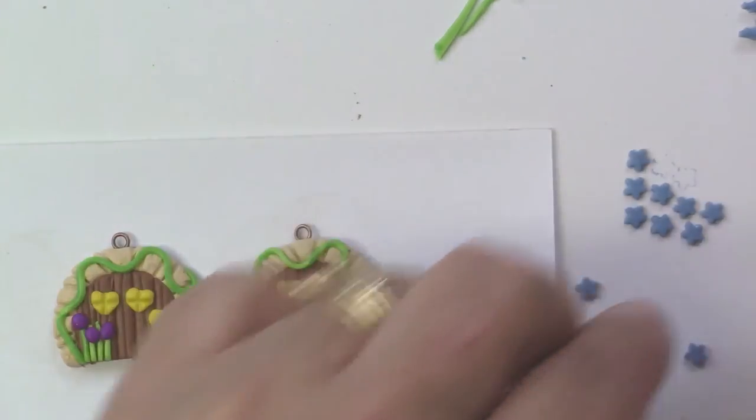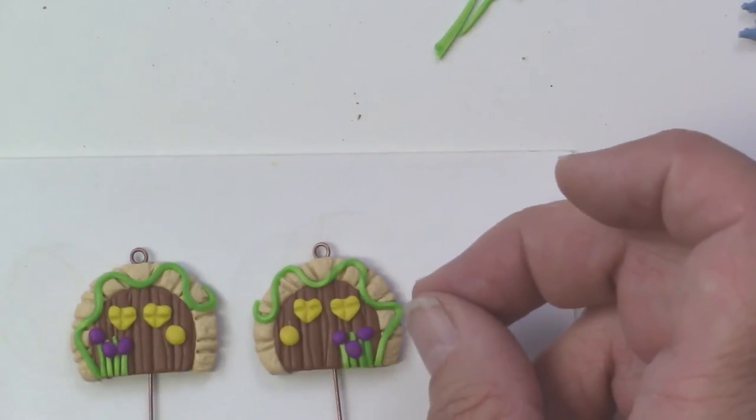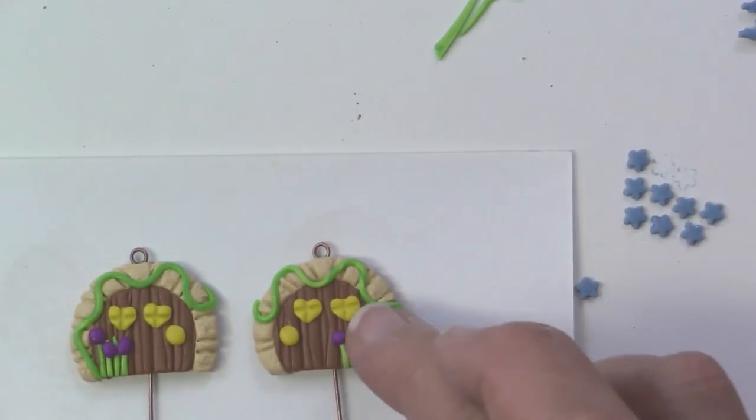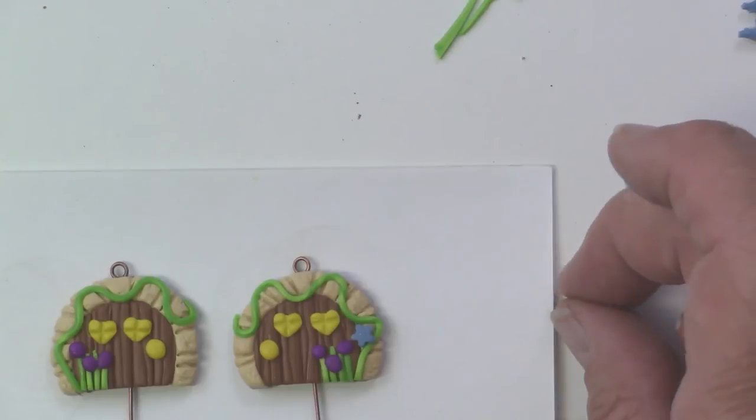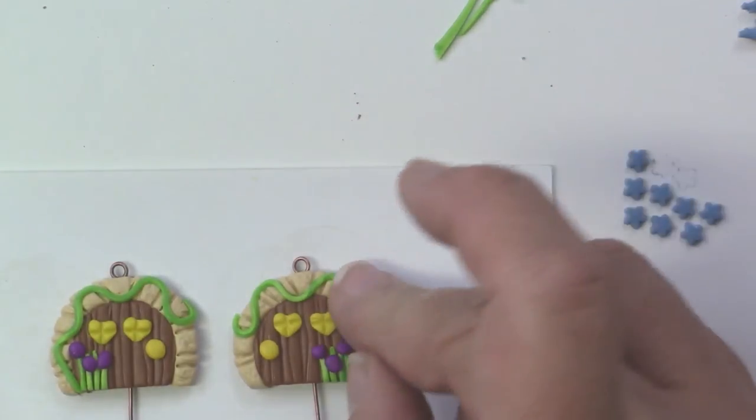Go ahead and cut out your little flower shapes. I'm placing about five of those flowers just around the vine, around that door frame.